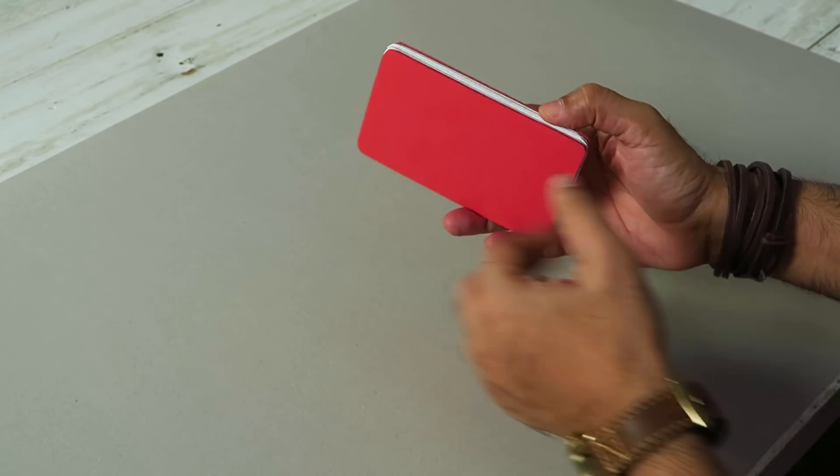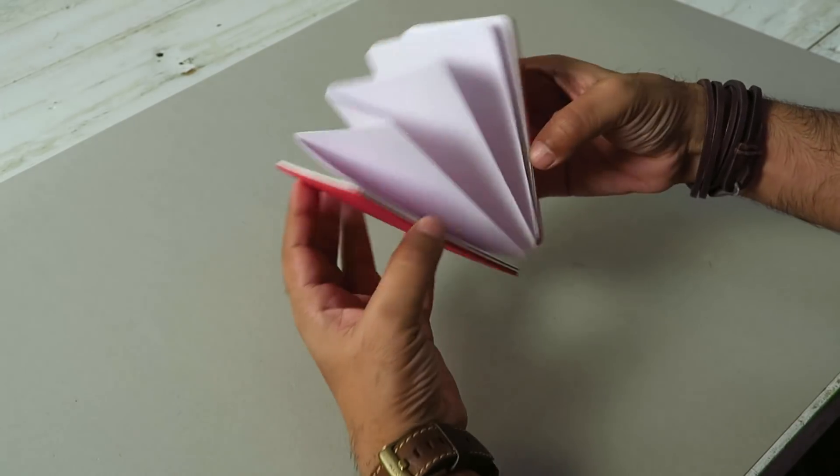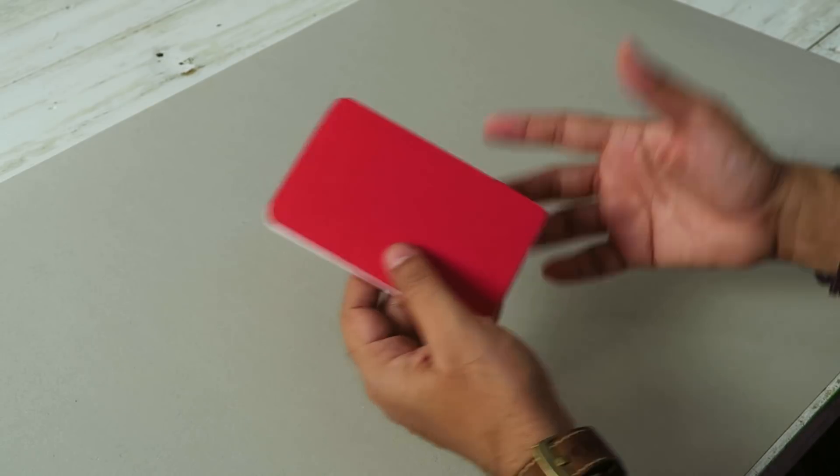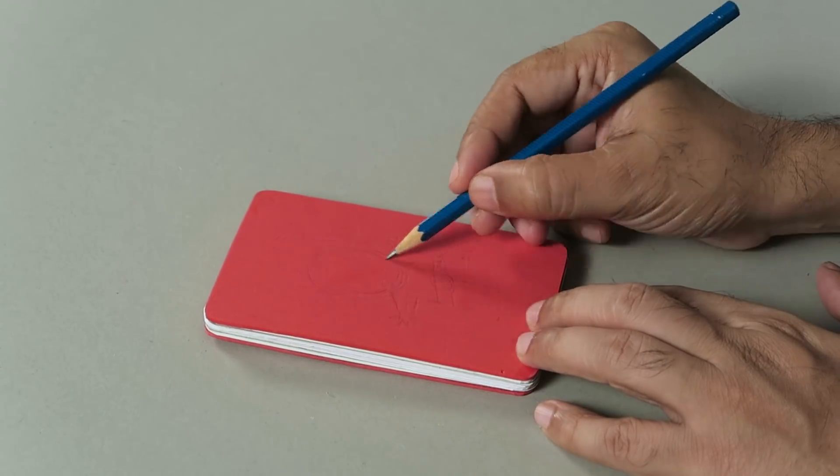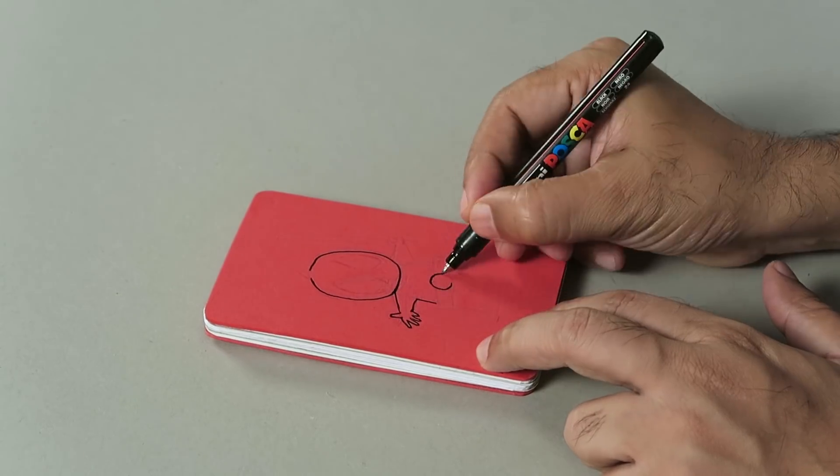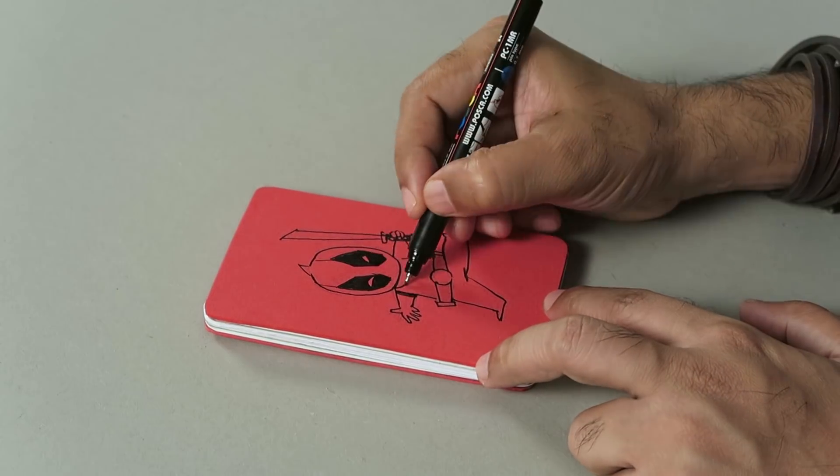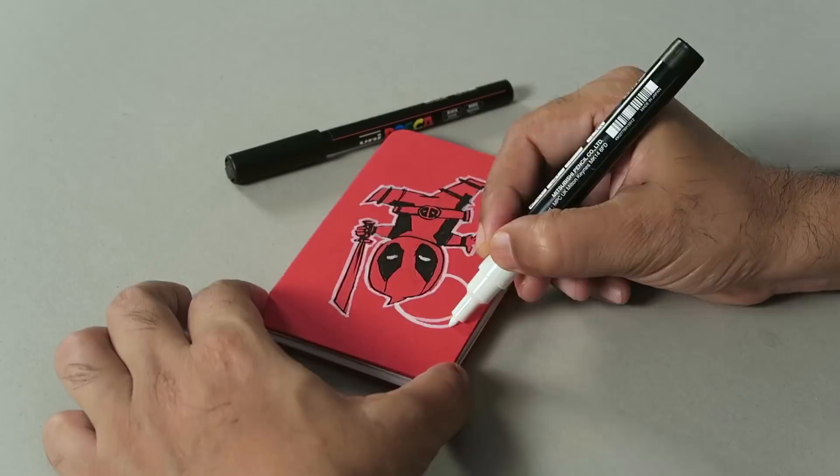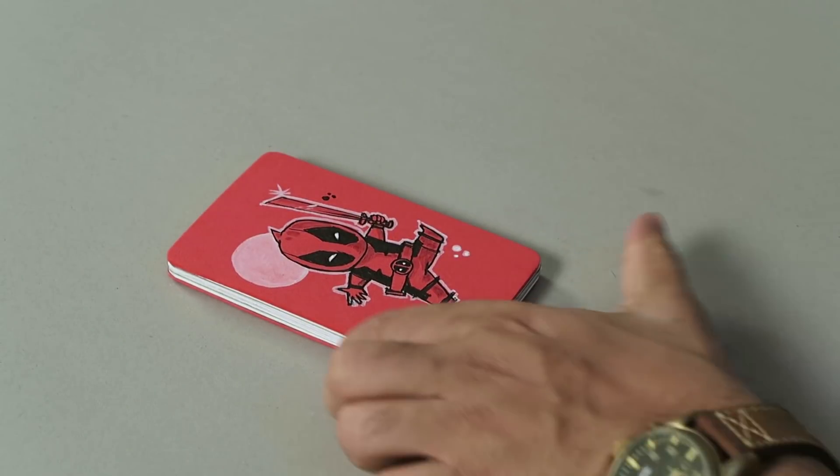So you can see I have glued the pages to the covers and it looks pretty cool. Now if you want, you can personalize it, customize it, draw something. I'm thinking because this is a mini diary, I should add a mini superhero to this, and I'm done.